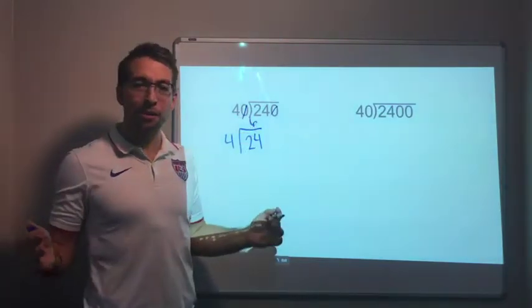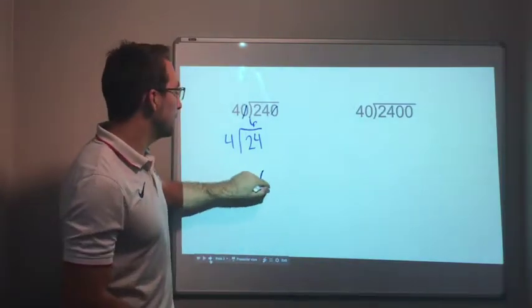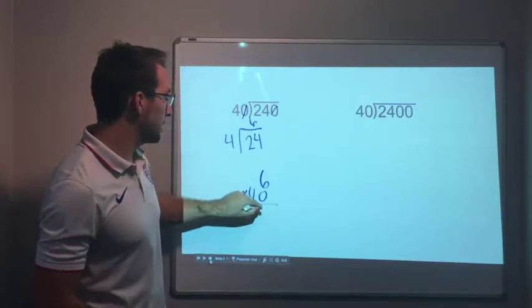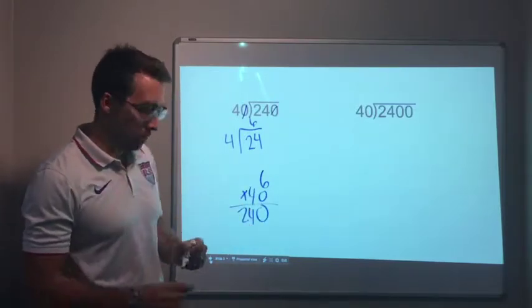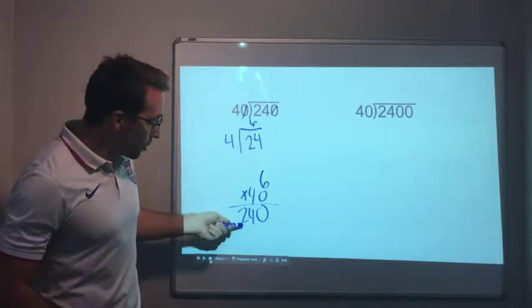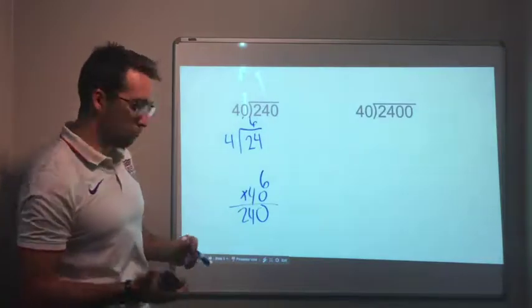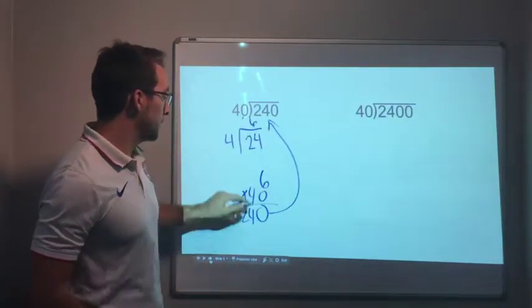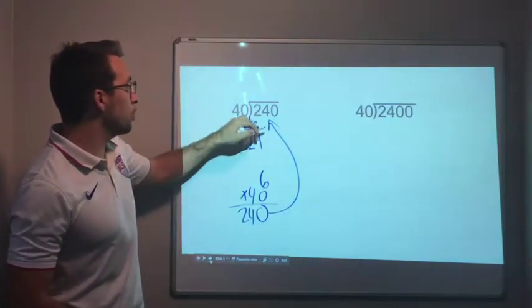We always check our answer. Six times 40, right? Six times 40 is zero and then 24, the answer to our original problem. The answer to our original problem will always be found. Six times 40 is 240. That's my answer. So 40 goes into 240 six times, the answer is six.